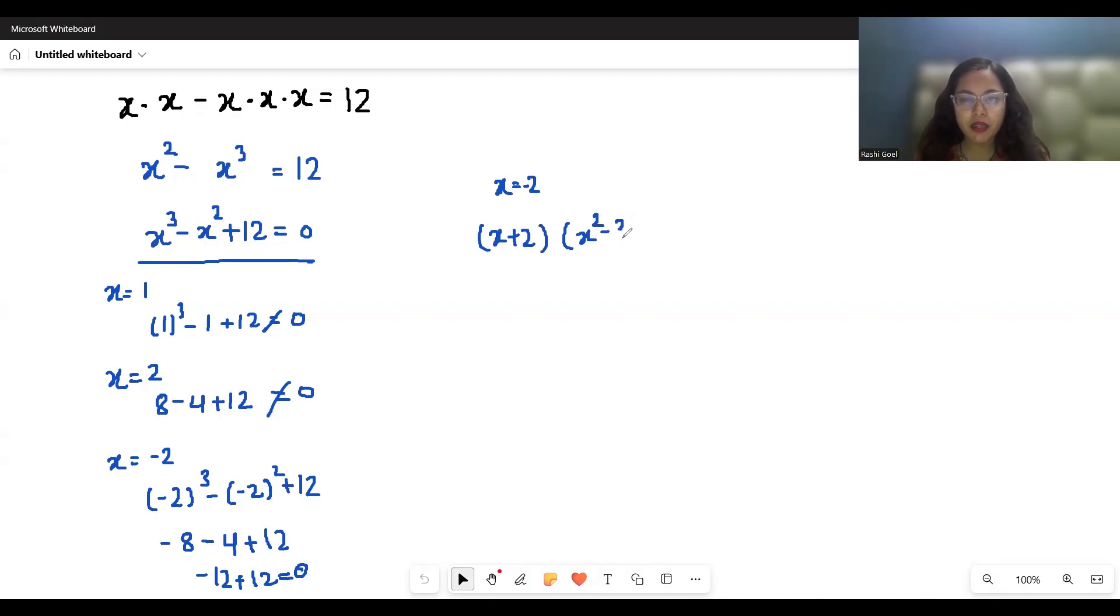We'll divide it with x plus 2. That x cubed minus x squared plus 12. First x squared gives us x cubed plus 2x squared. When we subtract, we get minus 3x squared plus 12.